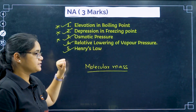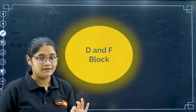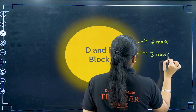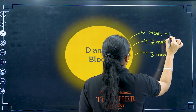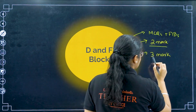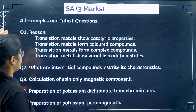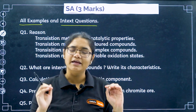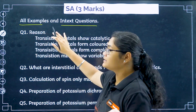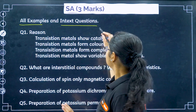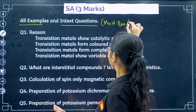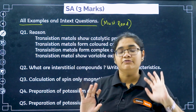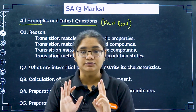Now let's move to the second chapter: D and F Block Elements. Here you will have two-marker questions, three-marker questions, and MCQ plus fill-in-the-blanks. First of all, read all examples and in-text questions from your NCERT book — this is very important. Most of them can cover your two-marker section. You can find answers online too. There are about 10–15 questions total including examples and in-text questions, so please do all of them.